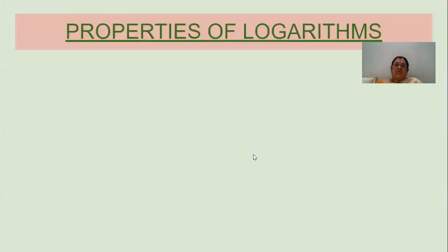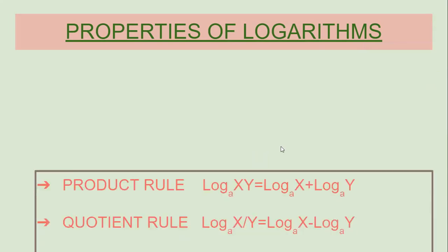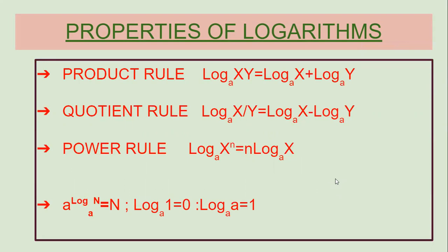Now we will move on to the properties of logarithms. As we know the properties of exponents from the 8th syllabus — basing on those, these formulas arise. There is a link between those formulae and these. When there is multiplication between x and y inside a single logarithm, we get plus when splitting into two logarithms. That is the product rule. When there is division, we get minus — that is the quotient rule.